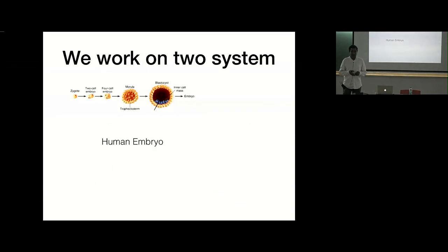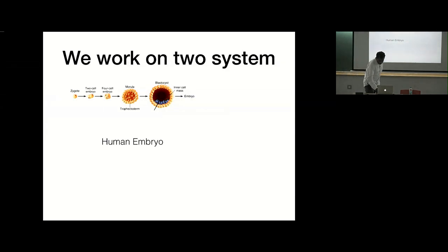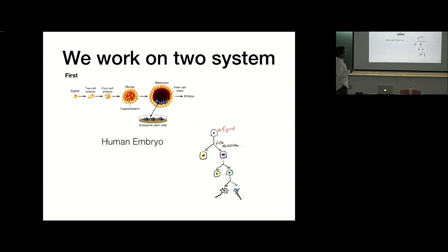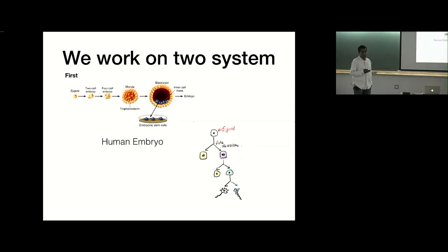We work primarily on two systems. One is looking at early human development. For this, we've been using both human embryonic stem cells and human fetal tissue. Here is an embryo — it's one fertilized cell, and eventually it becomes this hollow ball with cells inside. These blue cells are going to become all of you. If you take these blue cells out and keep them in a dish, they're embryonic stem cells — they can give rise to all the cell types in your body. The stem cell then makes a series of fate decisions that give rise to all the cell types in your body.